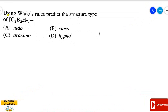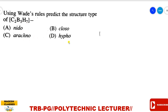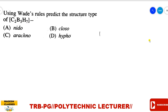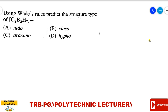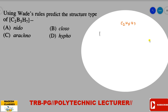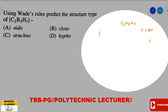Next question: using Wade's rules, predict the structure type of C2B5H7. The options are nido, closo, arachno, or hypo. Carbon in a carborane is equivalent to BH — boron with atomic number 5 and hydrogen with atomic number 1.